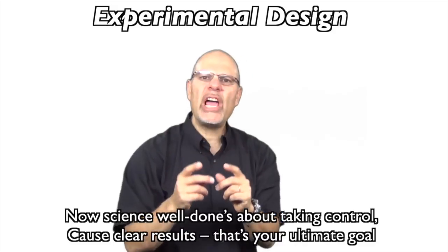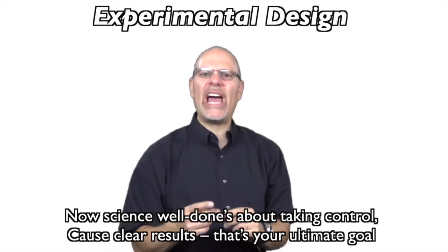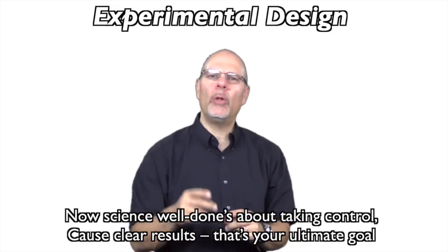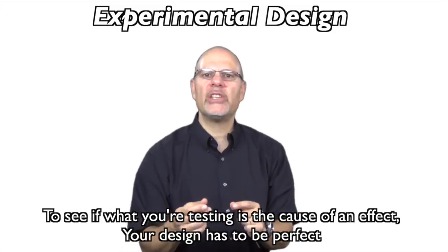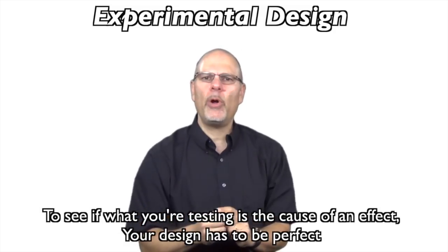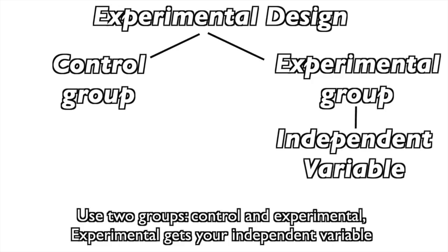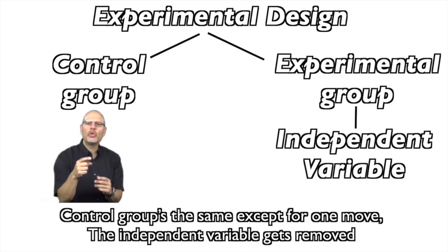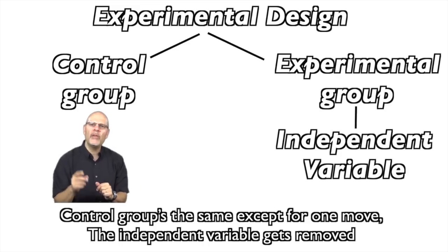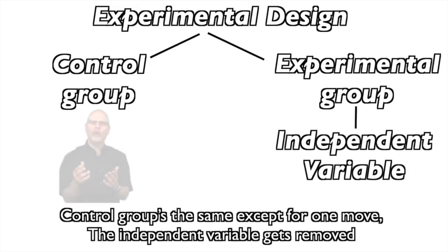Now science well done is about taking control across clear results — that's your ultimate goal. To see if what you're testing is the cause of an effect, your design has to be perfect. Use two groups: control and experimental. Experimental gets your independent variable. Control group's the same, except for one move: the independent variable gets removed.